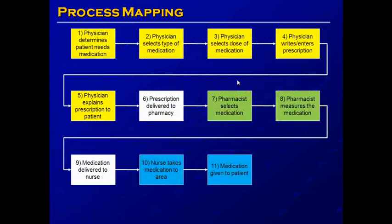You can see the entire process map put together — all 11 steps. The yellow steps are performed by the physician, the green steps by the pharmacist, and the blue steps by the nurse. Now that we've outlined the process map in slightly more detail, we can pick out where some errors might occur that could result in medication errors.